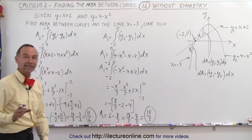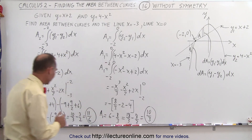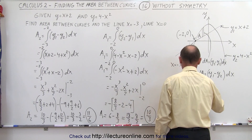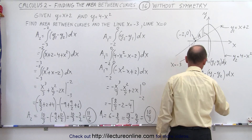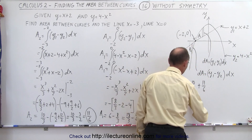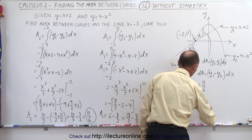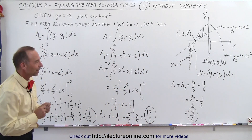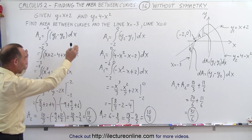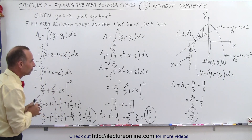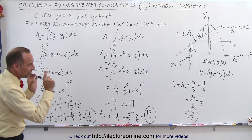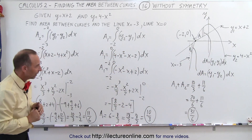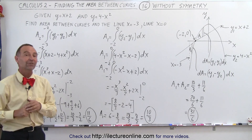Now we add the two areas together: A1 plus A2 equals 10 over 3 plus 11 over 6. The common denominator is 6, so that's 20 over 6 plus 11 over 6, which equals 31 over 6. That is the total area. Notice: if there's no symmetry, you do have to work out both integrals separately with their own limits of integration. You have to define the areas carefully — your dA's must reflect which function is on top and which is on the bottom — and then add them together for the final answer.